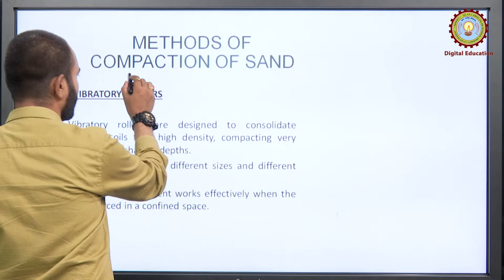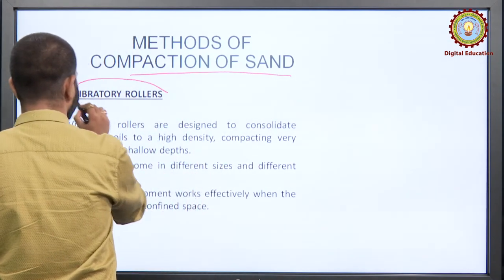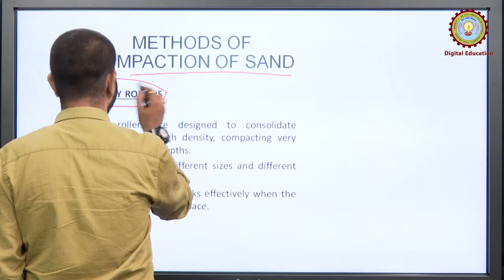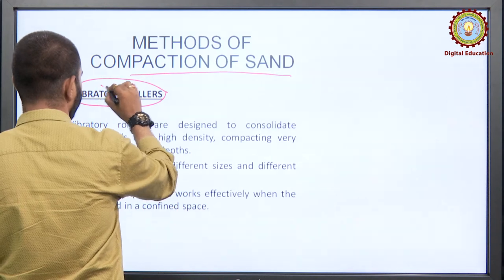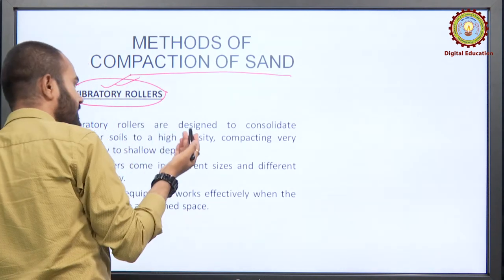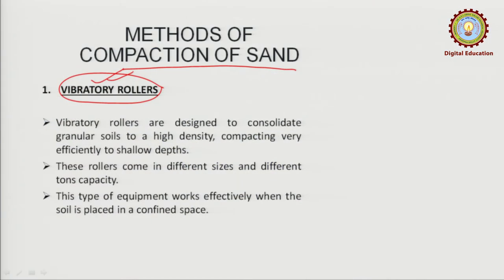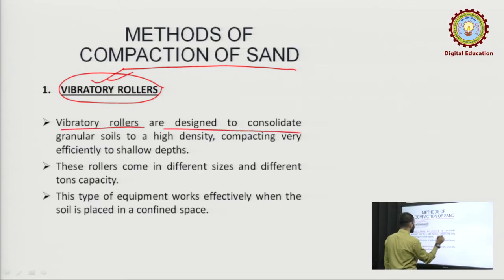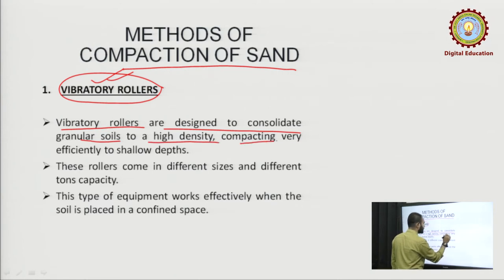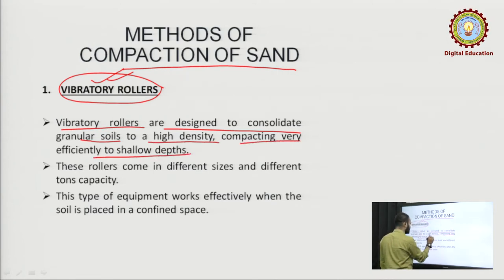Now let us see the methods of compaction. First: the vibratory roller, most commonly used. These are general rollers but with the provision of vibration as well. Vibratory rollers are designed to consolidate granular soils to a high density, compacting very efficiently to shallow depth. Remember — these can only be used for shallow depth.